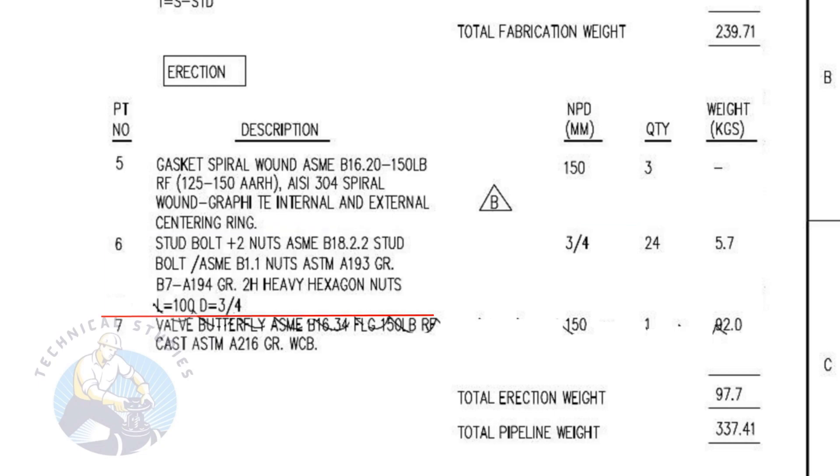Item number six is stud bolts with two numbers heavy duty nuts and washers. The stud length is 100 millimeters and the diameter is three fourth. The quantity is 24 numbers.